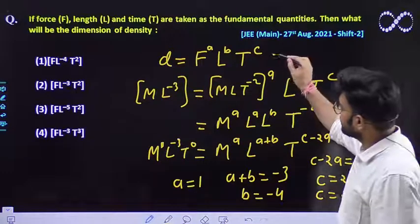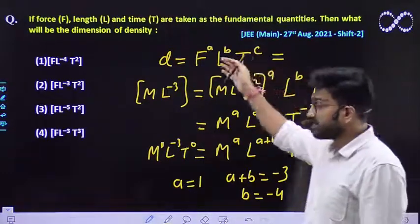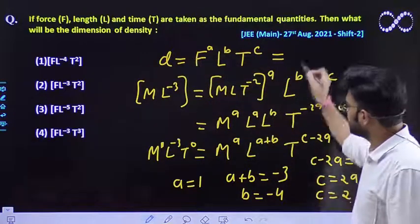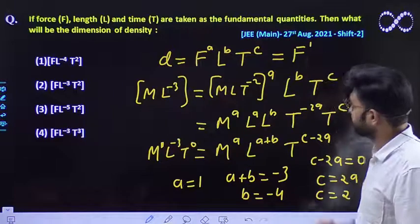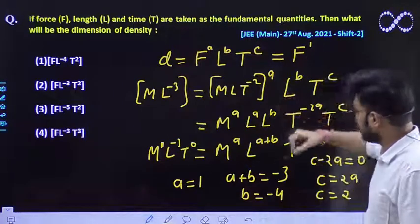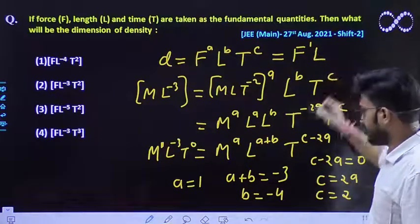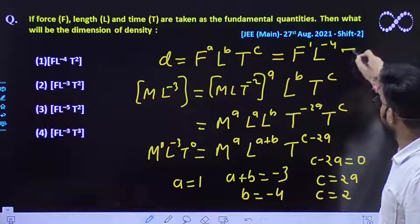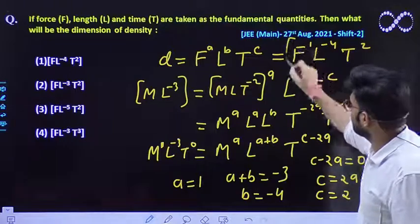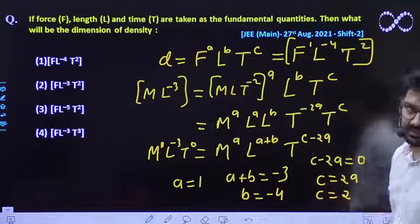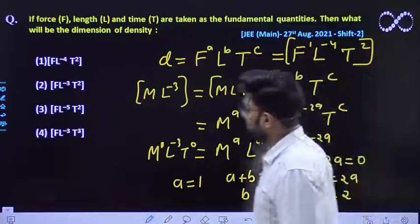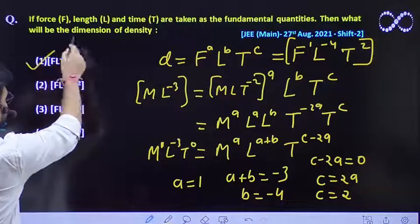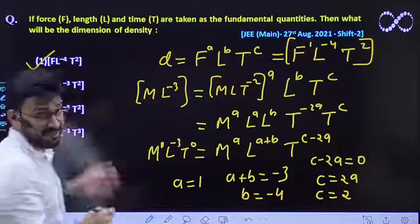So this relationship, the relation of density with force, length and time can easily be expressed as F^1, L^-4 as well as T^2. So this is the relationship that we are getting. So tell me which option is correct. So the option first would be the correct option that we are getting.